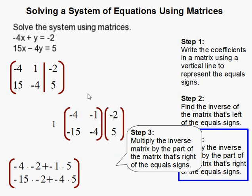So it's -4 times -2 plus -1 times 5, and then -15 times -2 plus -4 times 5.